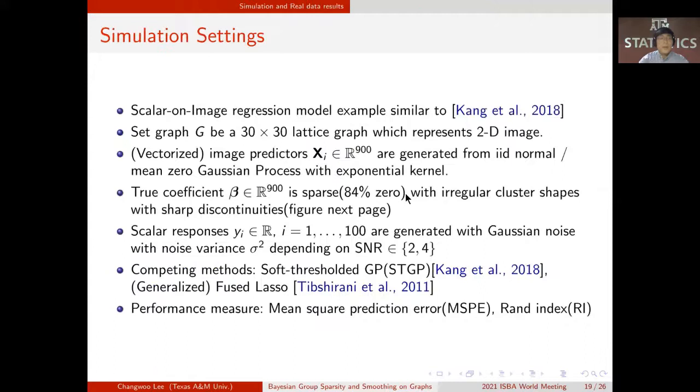Well, so to investigate the T-LoHo model in terms of performance, we conducted a simulation study motivated by the scalar-on-image regression example of Kang and others. In this case, graph G is now a 30x30 lattice which represents a 2D image.